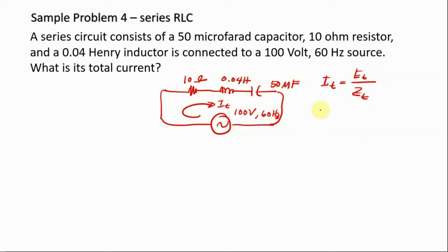To be able to get that, you have to get the reactances. For X of L, the formula is 2πfL. Just substitute that: 2π, f is 60, and L is 0.04 Henry. Get your calculator, you can press your calculator and it will give you 15.08 ohms.